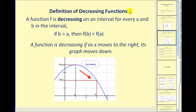The definition of decreasing functions is just the opposite. If b is greater than a, then f of b must be less than f of a. So if b is to the right of a, f of b must be lower than f of a. Or: a function is decreasing if as x moves to the right its graph moves down.